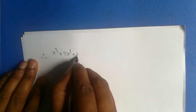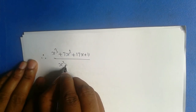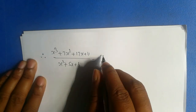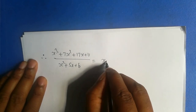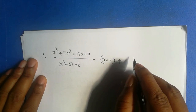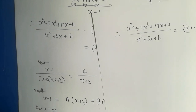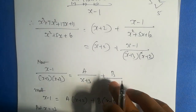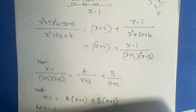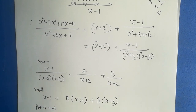Therefore, x cubed plus 7x squared plus 17x plus 11 divided by x squared plus 5x plus 6 equals x plus 2 plus — we found the value of A equal to minus 3, substitute in this and B as 4.